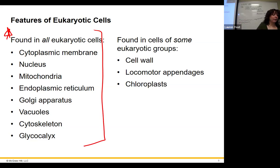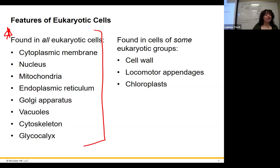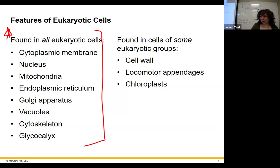All eukaryotes also have vacuoles for storage, a cytoskeleton for structure and transport, and a glycocalyx — which should be familiar from the last chapter when we talked about capsules and slime layers. We'll talk about what the glycocalyx means for eukaryotes specifically.